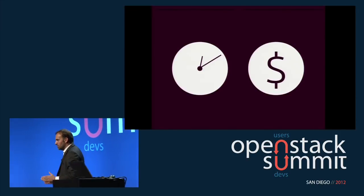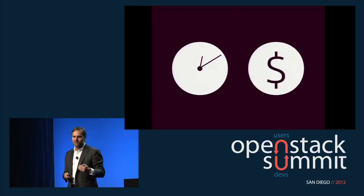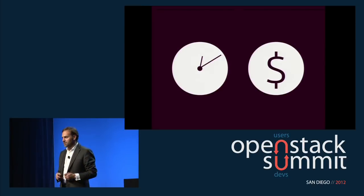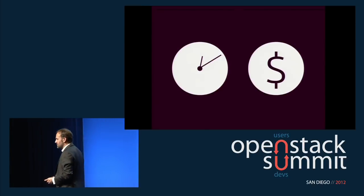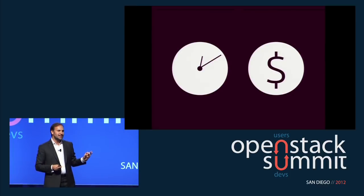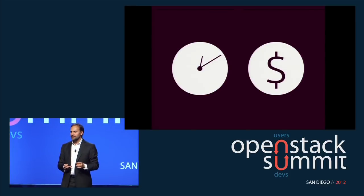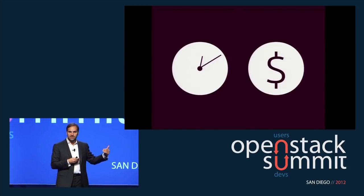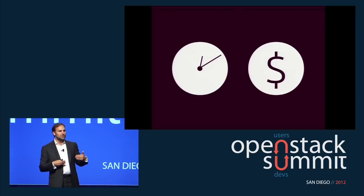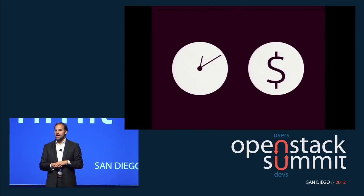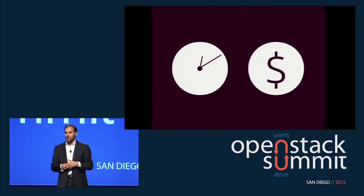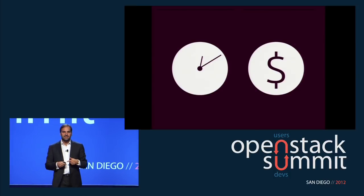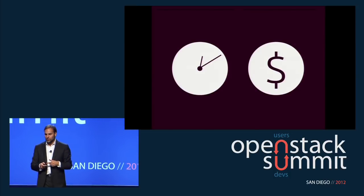On the telco front, a key set of issues for telco service providers is billing and metering. Canonical has been leading something called Ceilometer, which is an effort to create a standardized framework for metering inside OpenStack. Those of you looking at internal accounting or external billing around OpenStack should check out the Ceilometer sessions or come see us at the Canonical booth.